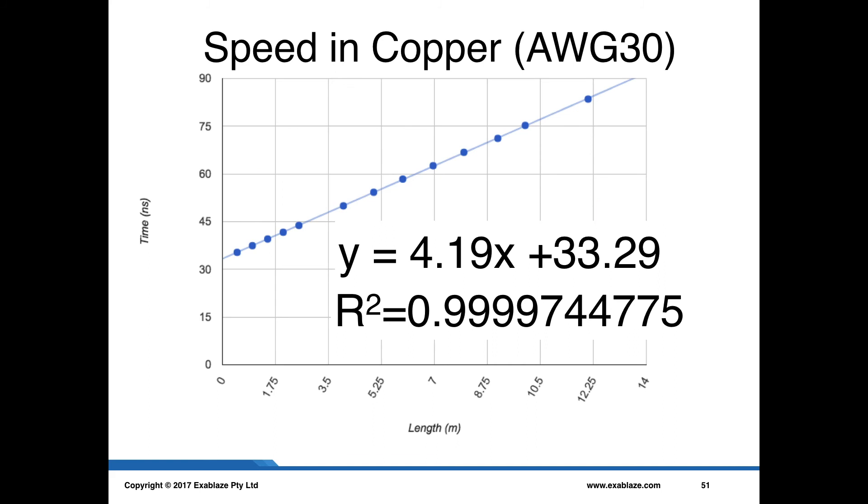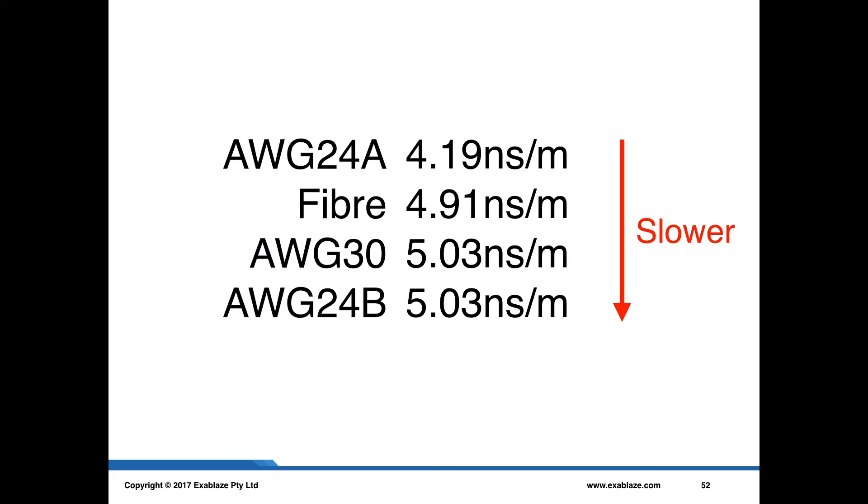If we remove that bad data point, the curves start to look a lot more sensible. The correlation goes up and the values become what we'd expect. Interestingly, we now get quite a nice looking ranking here of fiber and copper delays. You can see that as we expect, the AWG24 cable is actually the fastest one at 4.19 nanoseconds per meter. And these odd slow type of cables which happen to be sharing the same manufacturer are the ones at the bottom at 5.03.